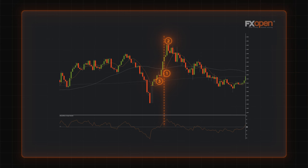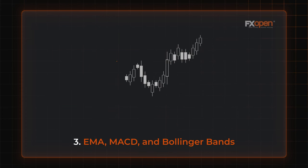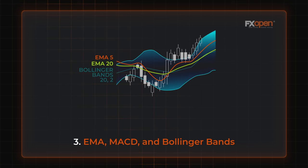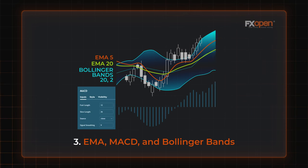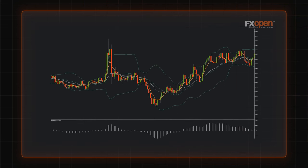EMA, MACD, and Bollinger Bands. This is another five-minute trading strategy. It includes exponential moving averages with periods of 5 and 20, Bollinger Bands with standard settings — length of 20 and standard deviation of two — and MACD with standard settings: fast EMA with a period of 12, slow EMA with a period of 26, and a signal line with a period of nine, all applied to close prices. The chart reflects a potential sell trade: the five-period EMA broke below the 20-period EMA, the histogram was below zero, and the price was below the middle line of the Bollinger Bands indicator.